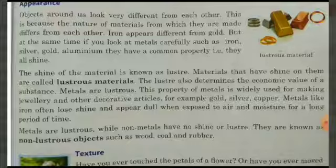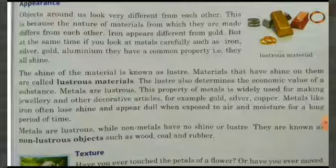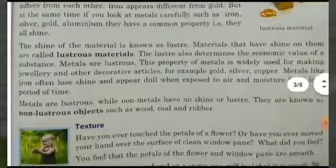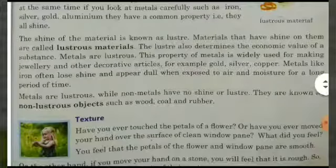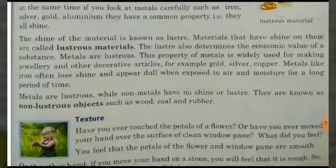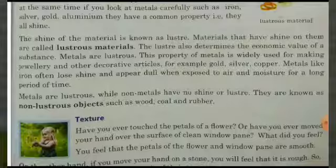Metals like iron often lose their shine and appear dull when exposed to air and moisture for a long period of time. When metals are kept in such conditions, they lose their shining property. Metals are lustrous, while non-metals have no shine — they are non-lustrous.